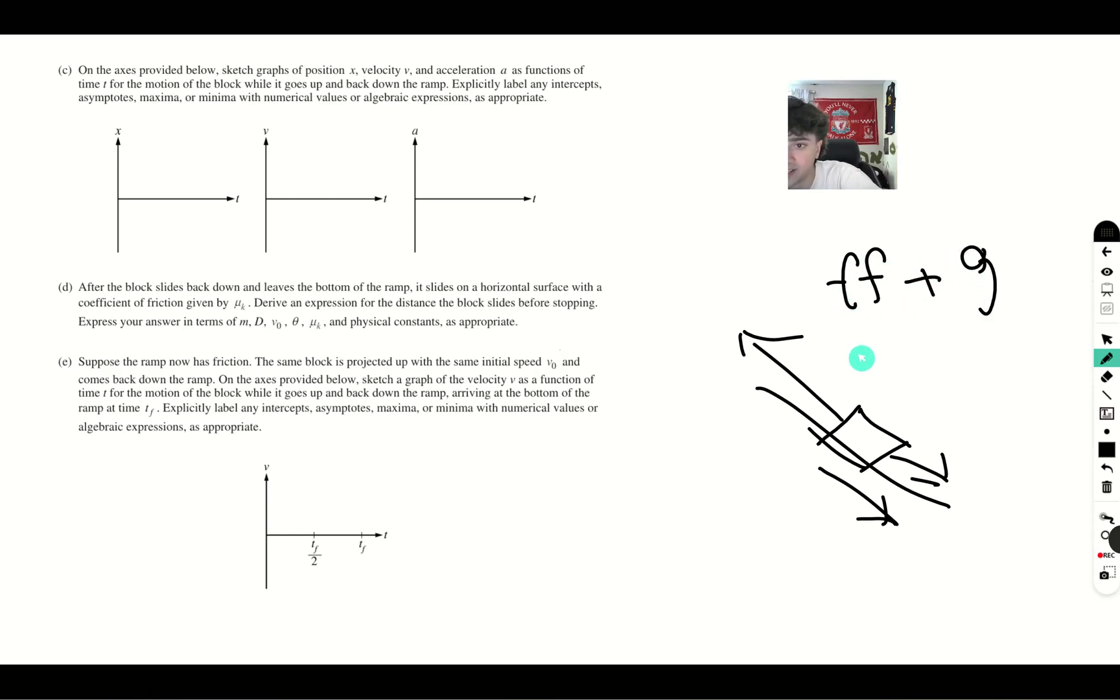But when it is going down, when the block's going down, friction is going up and gravity's going down. So it'll be gravity minus friction. So therefore, the acceleration is going to be greater on the way up. So it's going to be going up for less time than it is going down.